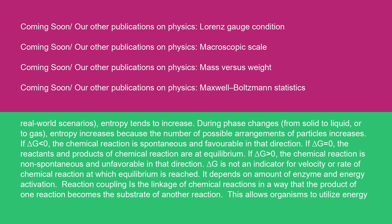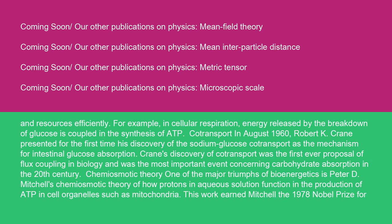If delta G is negative, the chemical reaction is spontaneous and favorable in that direction. If delta G equals zero, the reactants and products of the chemical reaction are at equilibrium. If delta G is positive, the chemical reaction is non-spontaneous and unfavorable in that direction. Delta G is not an indicator for velocity or rate of chemical reaction at which equilibrium is reached; it depends on amount of enzyme and energy activation. Reaction coupling is the linkage of chemical reactions in a way that the product of one reaction becomes the substrate of another reaction. This allows organisms to utilize energy and resources efficiently.